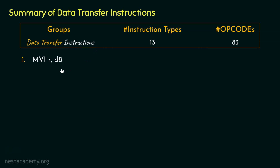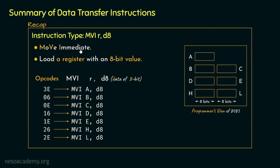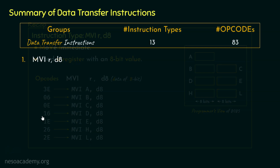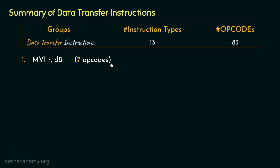The first instruction type we covered was MVI R, D8. The mnemonic MVI stands for Move Immediate, and we use this instruction to load a register with an 8-bit value that is sent through the instruction itself. There are seven different instructions covering seven opcodes for this type, since R represents each of the registers A, B, C, D, E, H, and L.